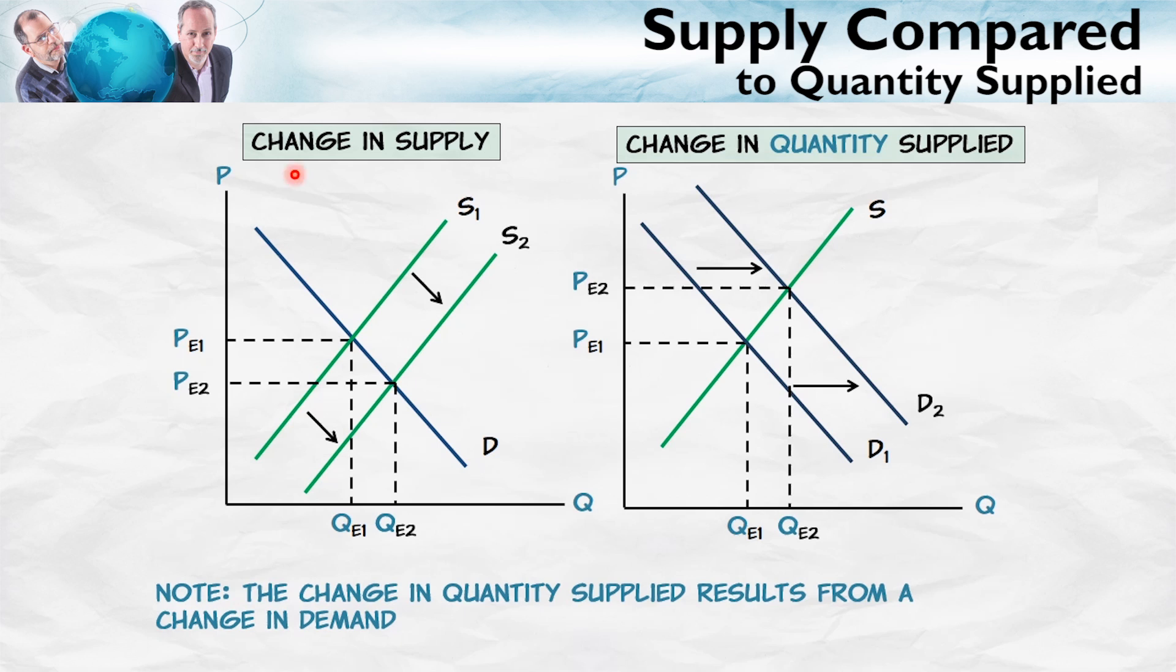Again, on the left, we have a change in supply. The entire supply curve shifts. On the right, we have a change in the quantity supplied, a movement along a fixed supply curve, caused in this case by an increase in demand.